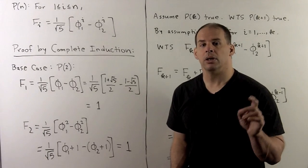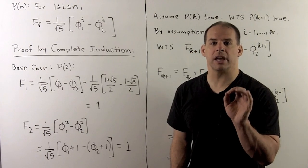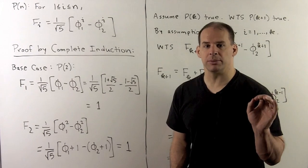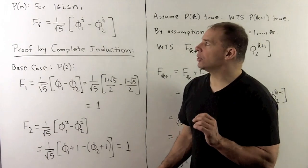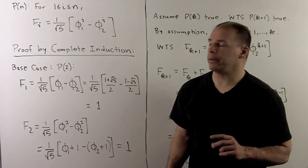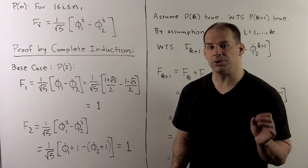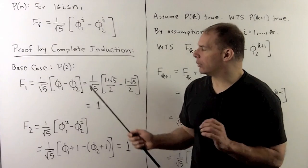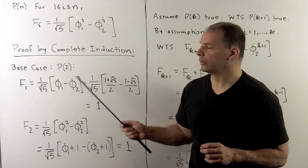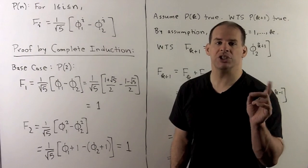For the proof, we use complete induction. The difference here, instead of assuming that the previous statement is true in the induction step, we assume that all previous statements are true. So, statement I'll use here, p of n, for i between 1 and n, the Binet formula holds. We announce that we're using complete induction. Then we have to show the base case. So, here the base case is p2. That says that the Binet formula holds for f1 and f2, so we check.